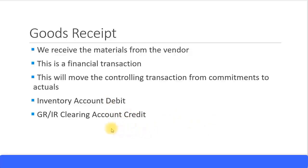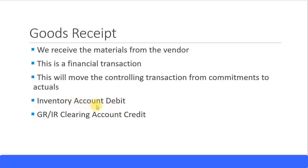The next stage is when you receive the invoice from the vendor. At that stage, the GR/IR clearing account gets debited and the vendor account gets credited, so the GR/IR debit and credit offset each other. You also run a clearing process to clear that account. For goods receipt, if the PO is for an expense rather than inventory, your expense account gets debited and the GR/IR clearing account gets credited.